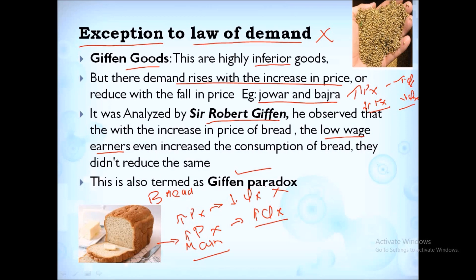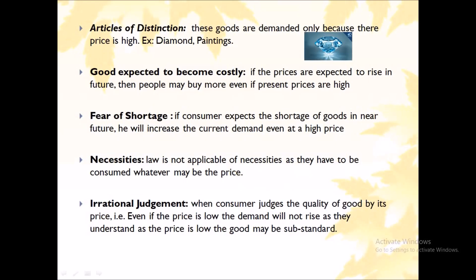The next exception is articles of distinction — goods that confer status in society. Examples include diamonds, antique paintings, iPads, and iPhones. The demand for these goods does not fall even if their prices are high, because they are status symbols. Even if the price is more, the quantity demanded will be more.